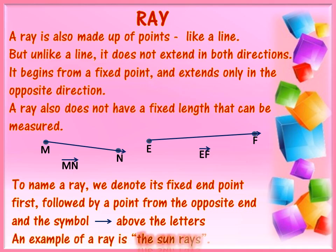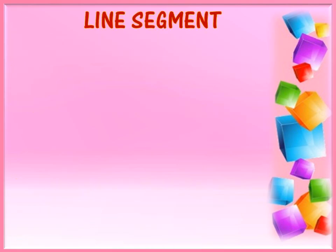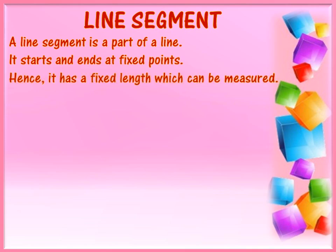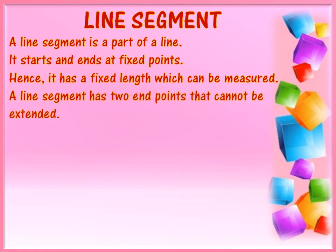An example of a ray is the sun rays that we draw. Line segment. A line segment is a part of a line. It starts and ends at fixed points, hence it has a fixed length which can be measured. Note that a line segment has two end points that cannot be extended. There are no arrows at the end points, which means that a line segment does not extend beyond its fixed end points.